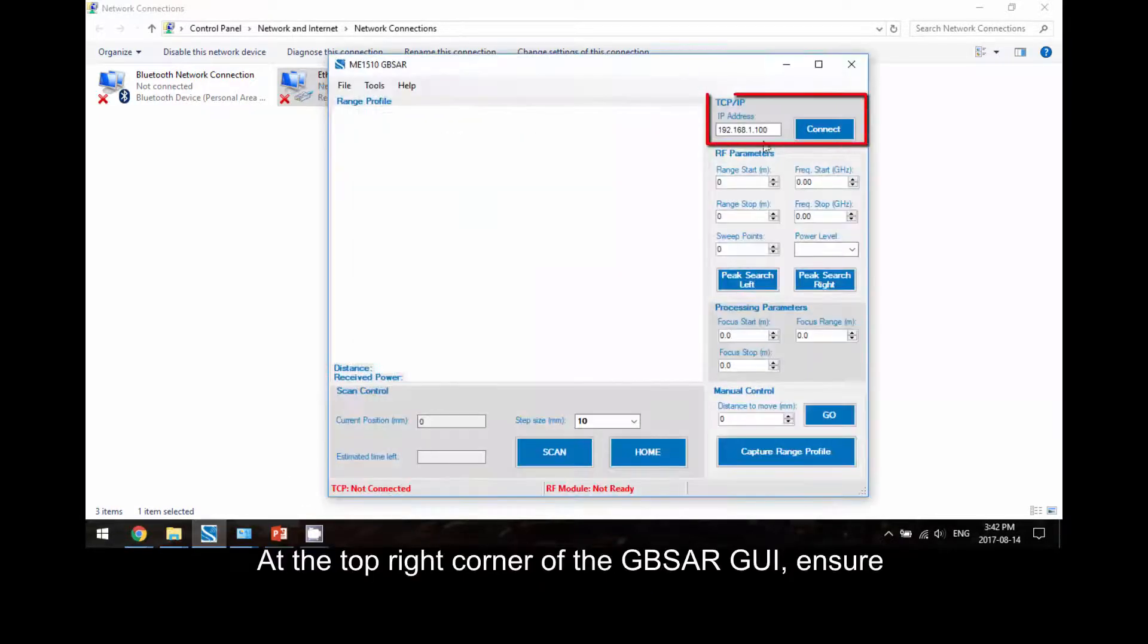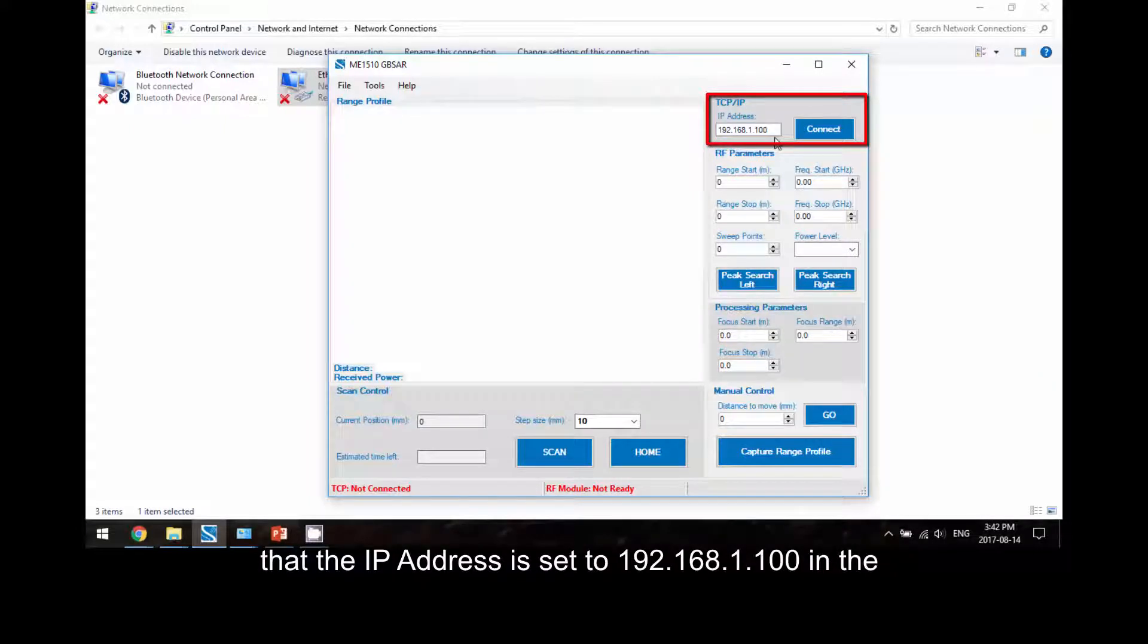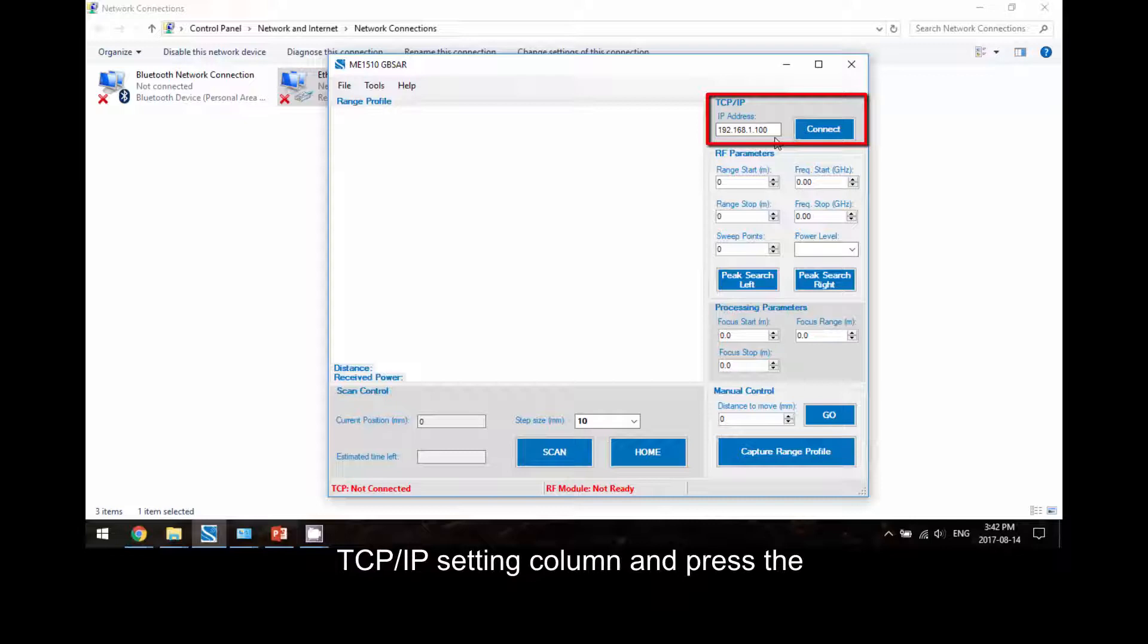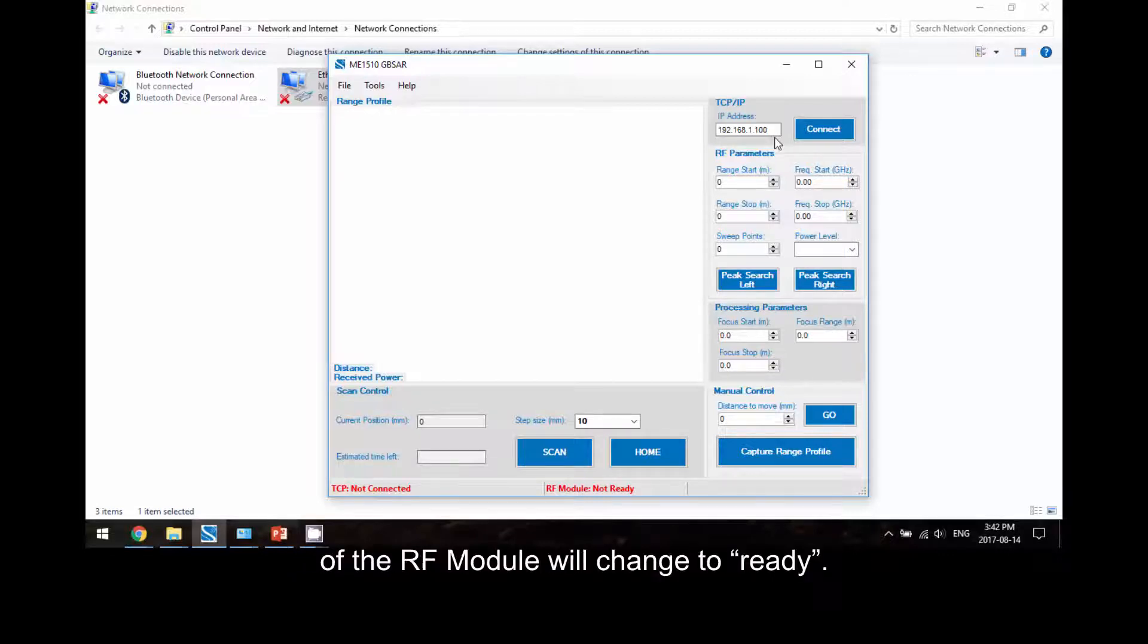At the top right corner of the GBSR GUI, ensure that the IP address is set to 192.168.1.100 in the TCP IP setting column and press the connect button. The status of the TCP IP will change to 192.168.1.100 connected, whereas the status of the RF module will change to ready.